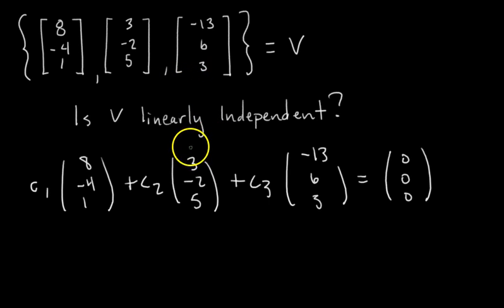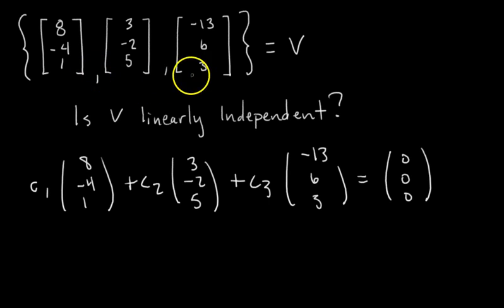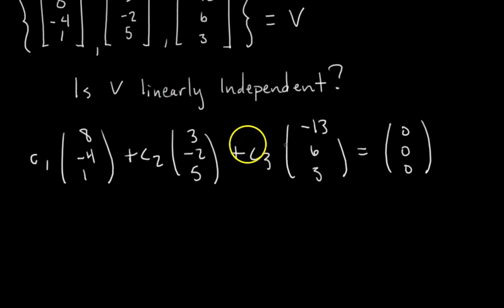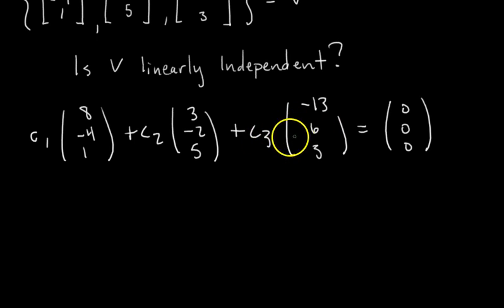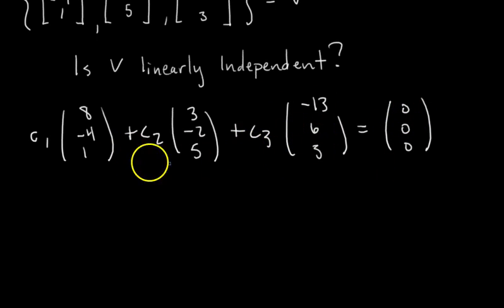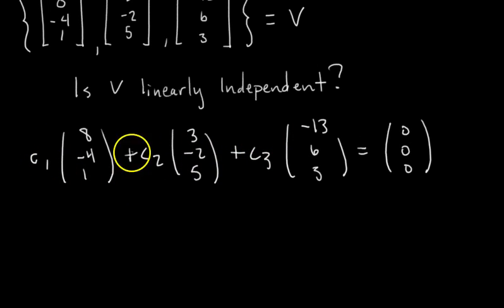The way I think about linear dependence: a set of vectors is linearly dependent if you can pick at least one vector and write it as a linear combination of the others. This makes sense because if you find non-zero C1 through C3, you can move the third term over and divide by C3 — and you've written that vector as a linear combination of the other two. The point is: if you can write this linear dependence relation with non-zero C1 through C3, then the set is linearly dependent.